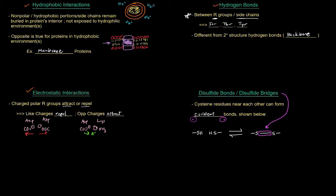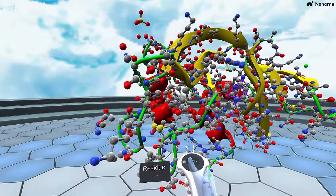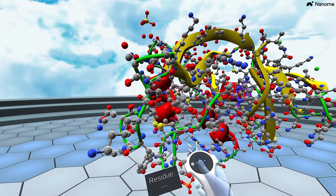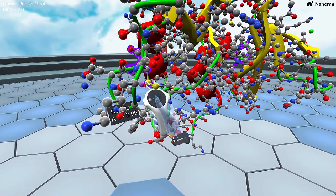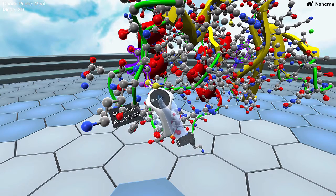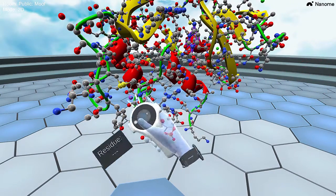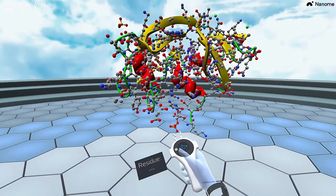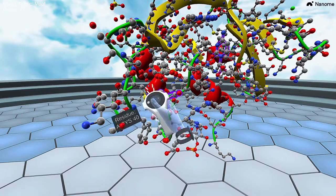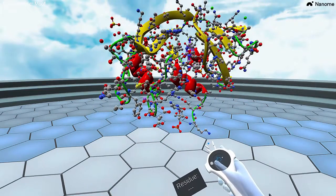The disulfide bond is important because it's the only interaction in tertiary structure that's actually covalent — hydrophobic interactions, hydrogen bonds, and electrostatic interactions are all non-covalent. The disulfide bridge forms in an oxidizing environment; an oxidation reaction removes the hydrogens to give the disulfide bridge. Here in RNAase A, there's a disulfide bridge between cysteine 40 and cysteine 95, which is important in holding the entire protein structure together.